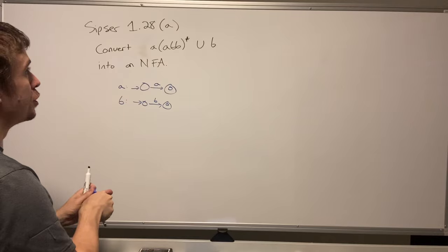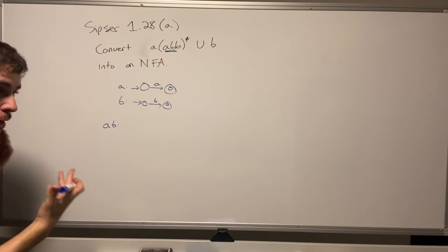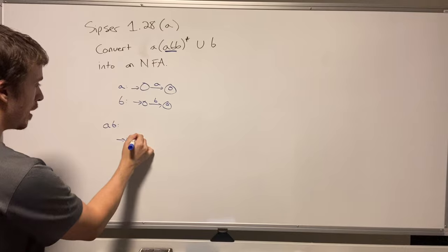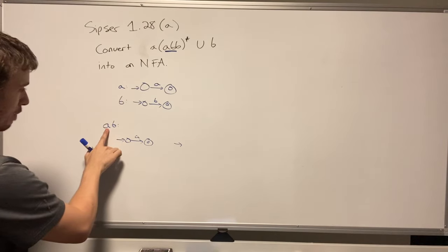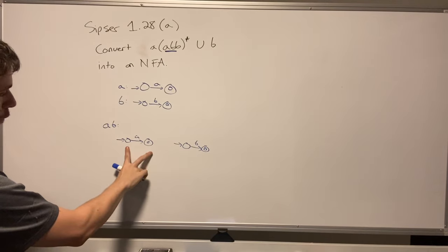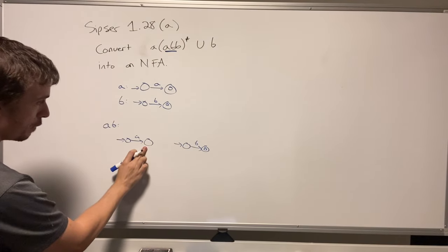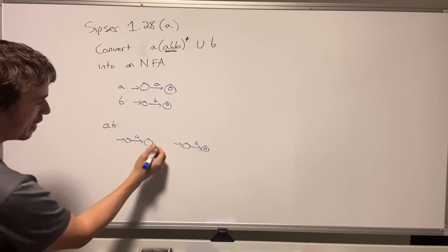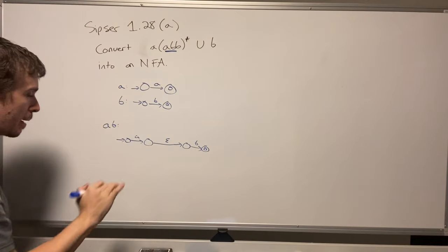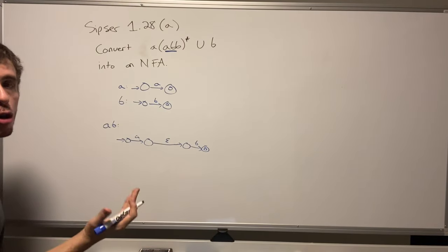Let's work with two pieces and do 'ab'. For concatenation, we take the two NFAs and copy them down, then connect one to the other — 'a' goes first, then 'b'. What we need to do is connect every final state of the first machine to the start state of the second machine with an epsilon transition, making the original final state non-final. This is an algorithmic method that always works, though a smaller NFA is possible.